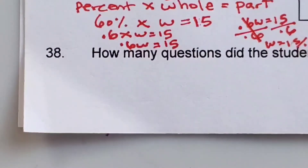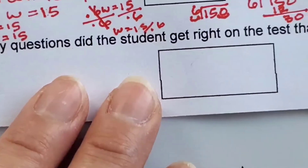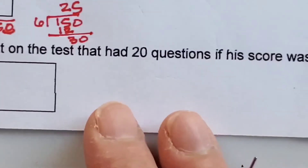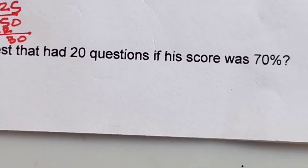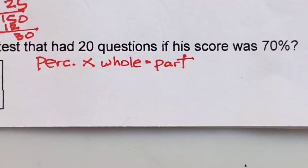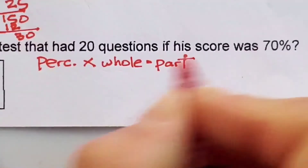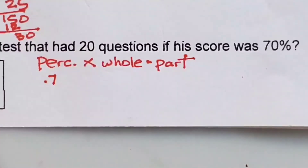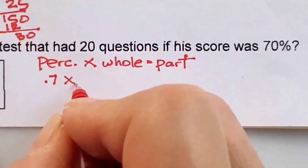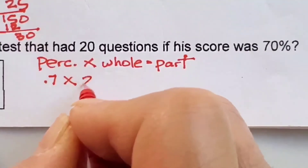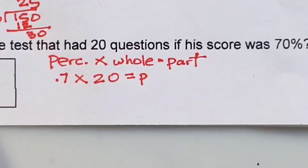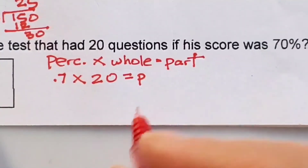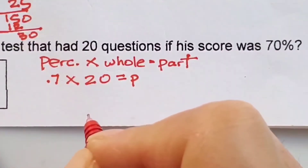Number 38: how many questions did the student get right on a test with 20 questions if his score was 70%? We know the test had a total of 20 questions and he scored 70%. We're going to write out our percent formula again. Our percent is 70%, translated to 0.7, times our whole which is 20 questions. We do not know the part — we don't know what the student got right.